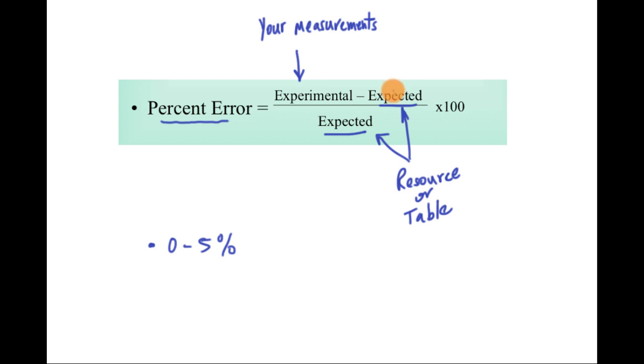Now, one thing about percent error—because there's subtraction here, some people will put an absolute value in here. It's fine, I get what they're doing, they don't want the negative. But I personally don't like that; I like the negative. Your percent error can be positive or negative. If it's positive, I know my experimental measurement was bigger than expected. If it were negative, I would know my measurement was less than expected. This is really valuable information.